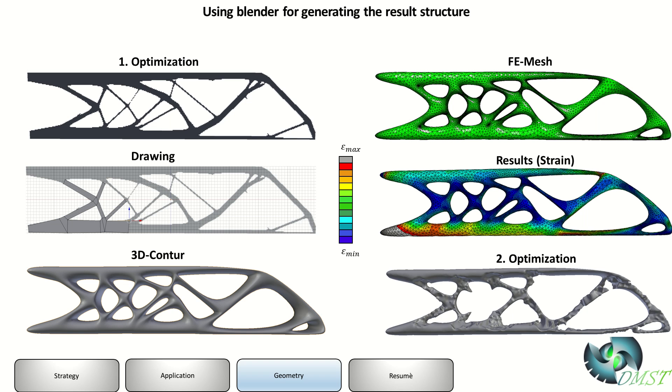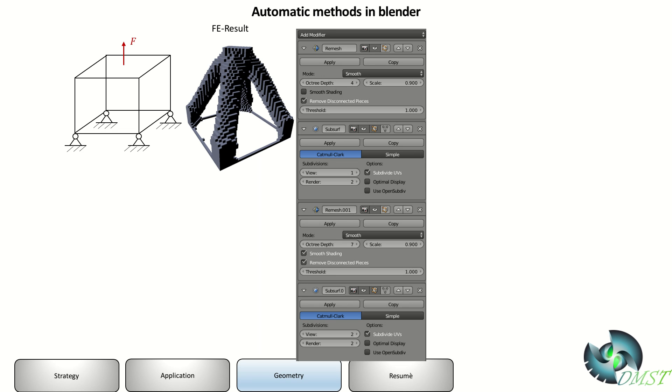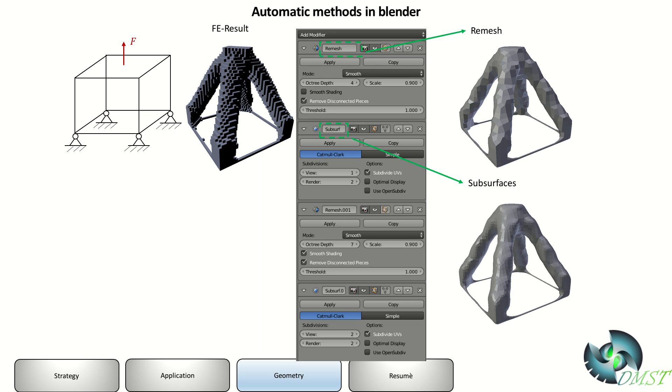The second one is how can we use it automatically in Blender. We have a finite element result with this block structure. We import it as an STL, you can choose another format as well. Then we use remesh in Blender, you can remesh it, and then you get a smooth structure.